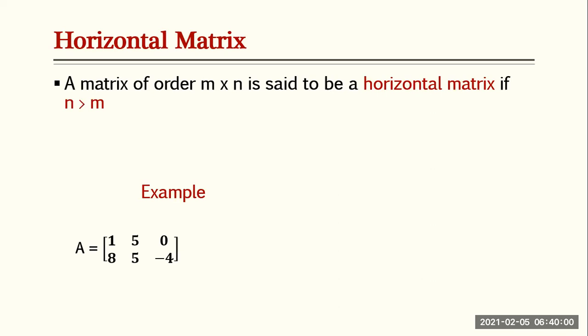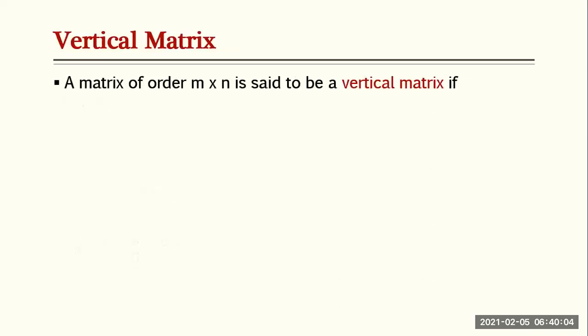A matrix of order m by n is said to be a vertical matrix if m is greater than n. The number of rows in the matrix should be more than the number of columns. For example, matrix A has more rows than columns, so we call it a vertical matrix.